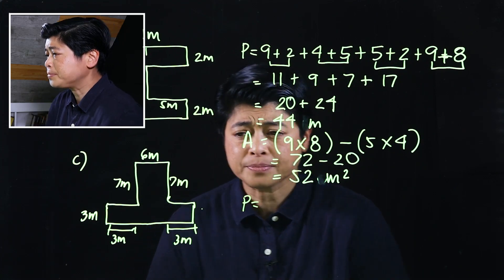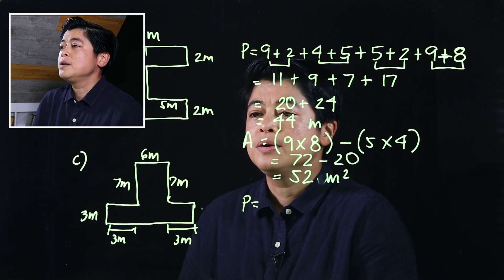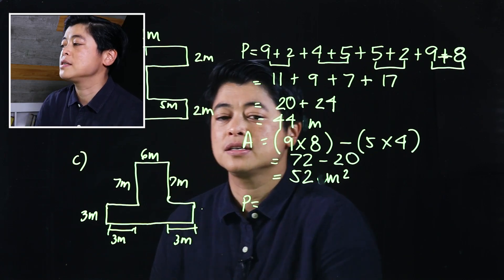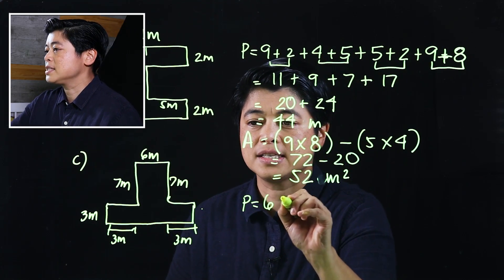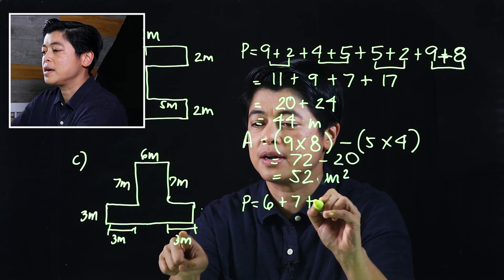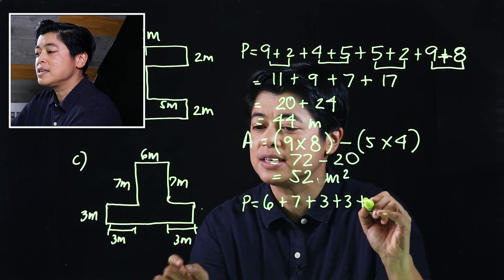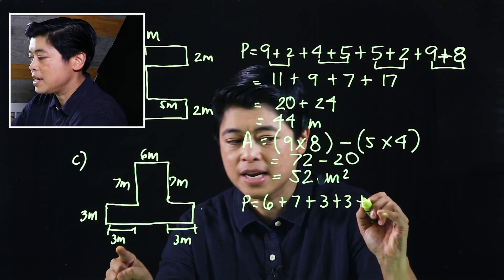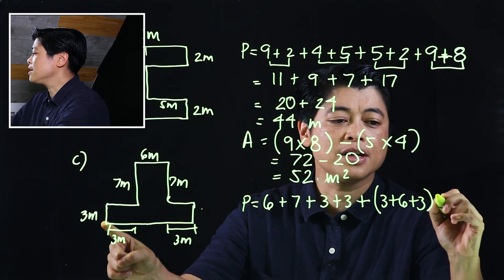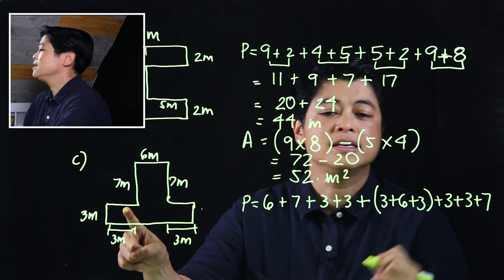For the next problem, finding the perimeter uses the same thought process — we take all the sides. So that's 6 plus 7, then this side is 3, plus another 3, then this section is 3 plus 6 plus 3, then another 3, and then another 7.